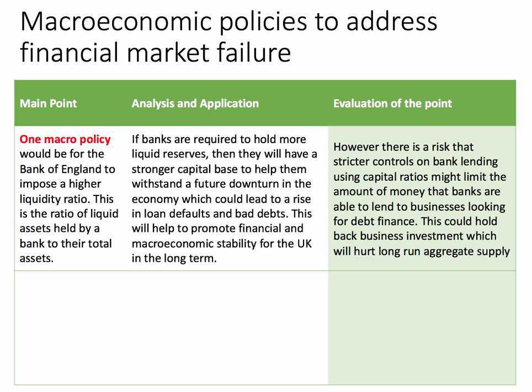However, there's a risk that imposing strict controls on bank lending using capital or liquidity ratios might limit the amount of money banks are able to lend to businesses looking for finance. That in turn could hold back business investment, which will hurt long-run aggregate supply. So controlling bank lending can potentially hamper the supply of credit to businesses.